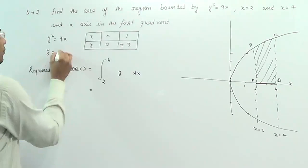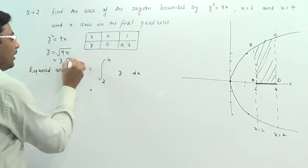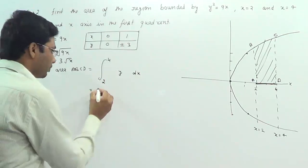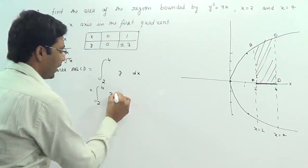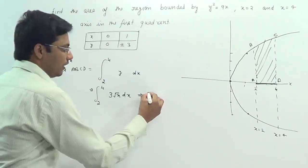Now plug the value of y. Y will be √(9x), which is 3√x. We are taking only the positive value because area cannot be negative. So from 2 to 4, 3√x dx.